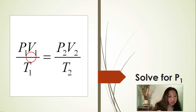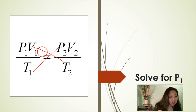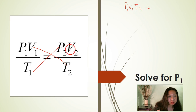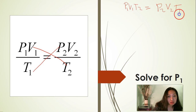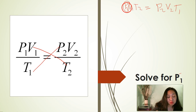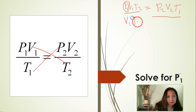Now solve for P1. Before we can solve for P1 we need to get rid of the denominator, so we are going to do that by cross multiplying the left and the right side of the equation. So P1 times V1 times T2 — we're going to write that here as P1 times V1 times T2, divided by P1 times T2.